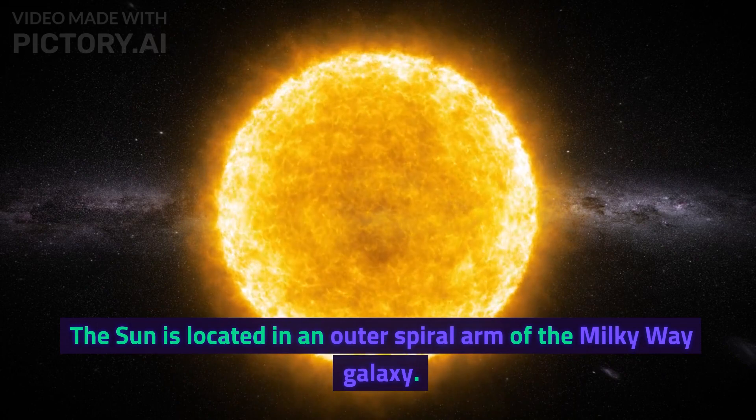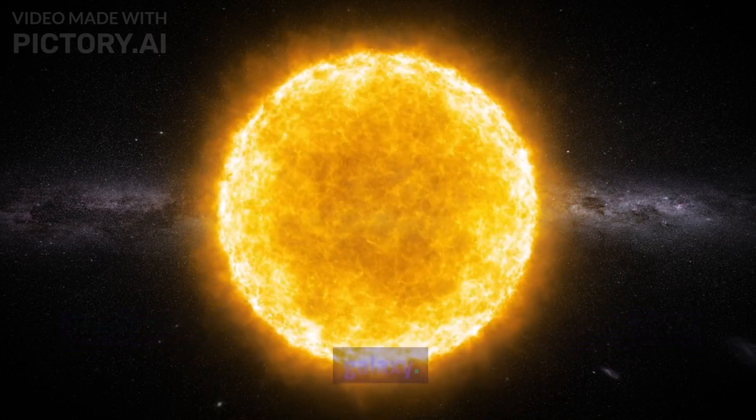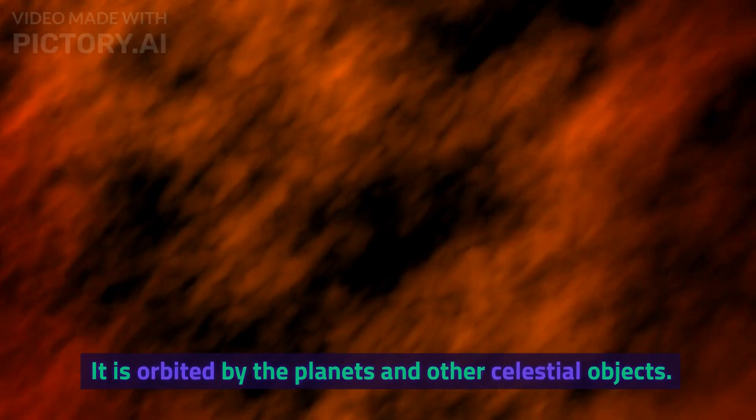The sun is located in an outer spiral arm of the Milky Way galaxy. It is orbited by the planets and other celestial objects.